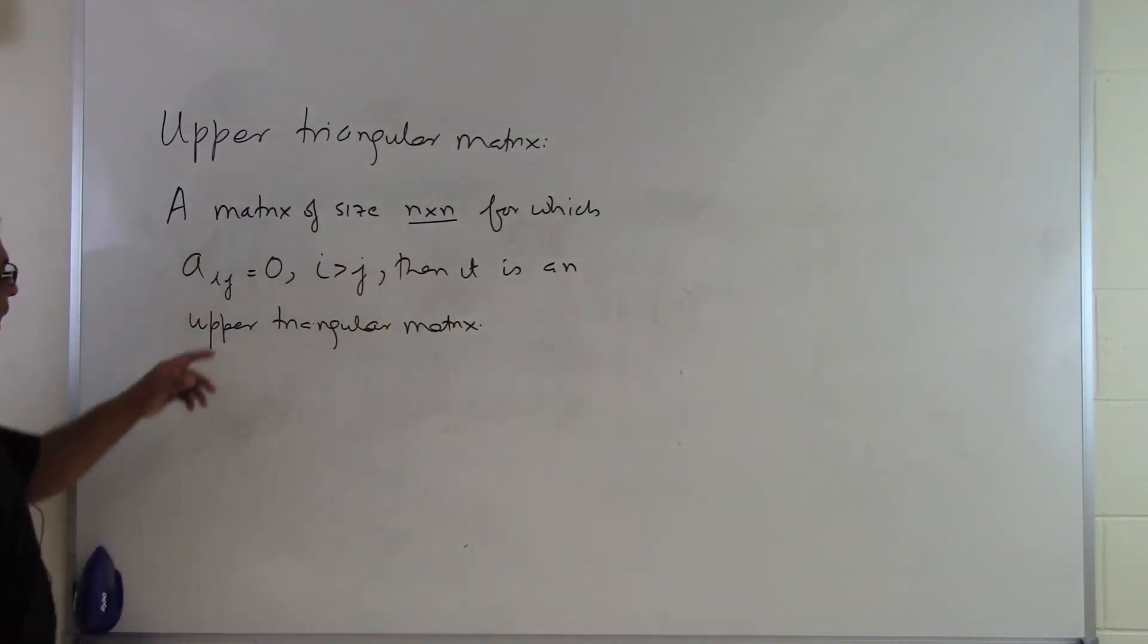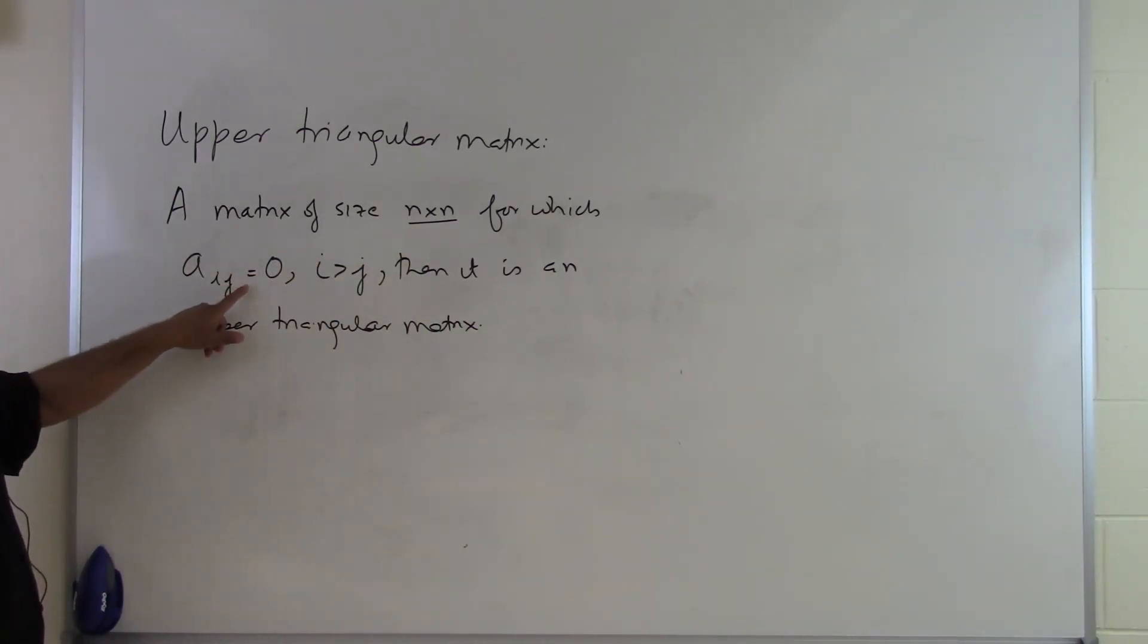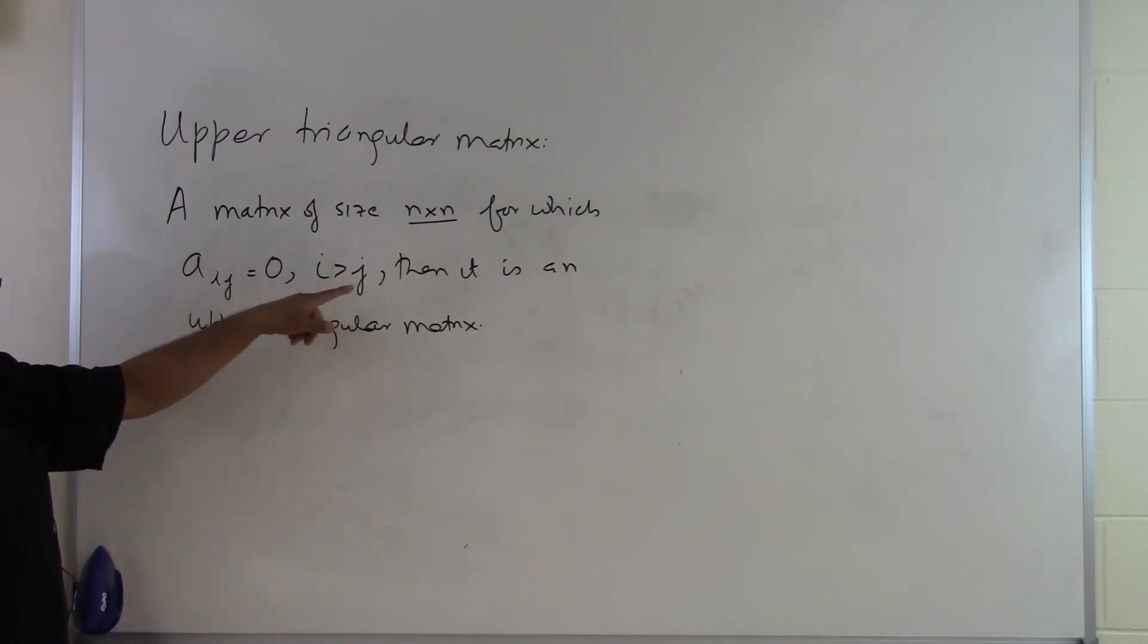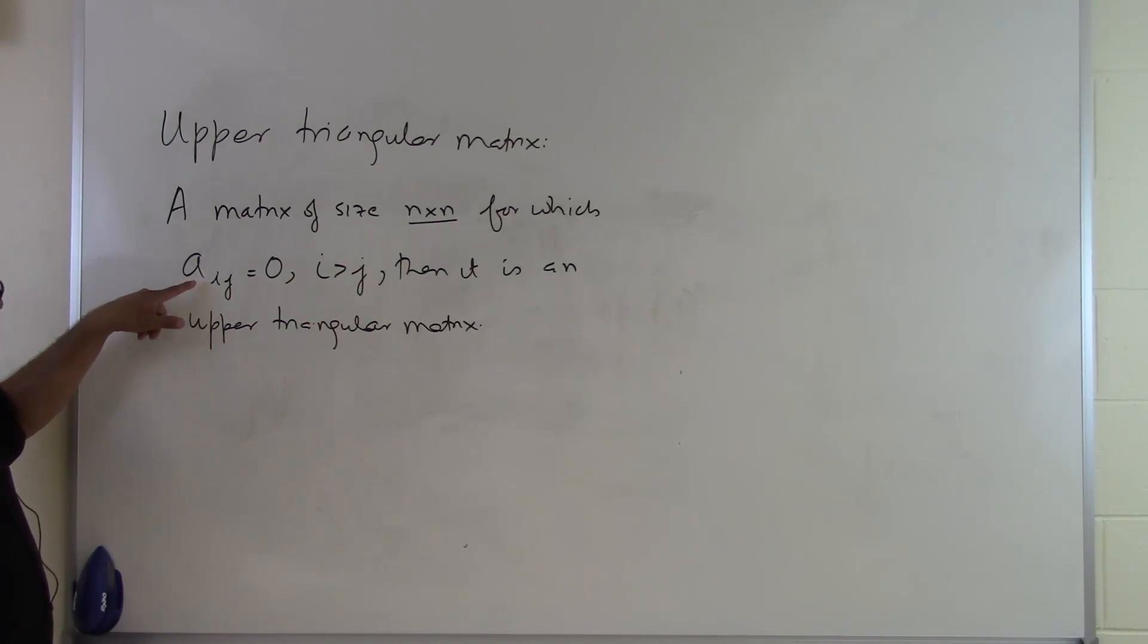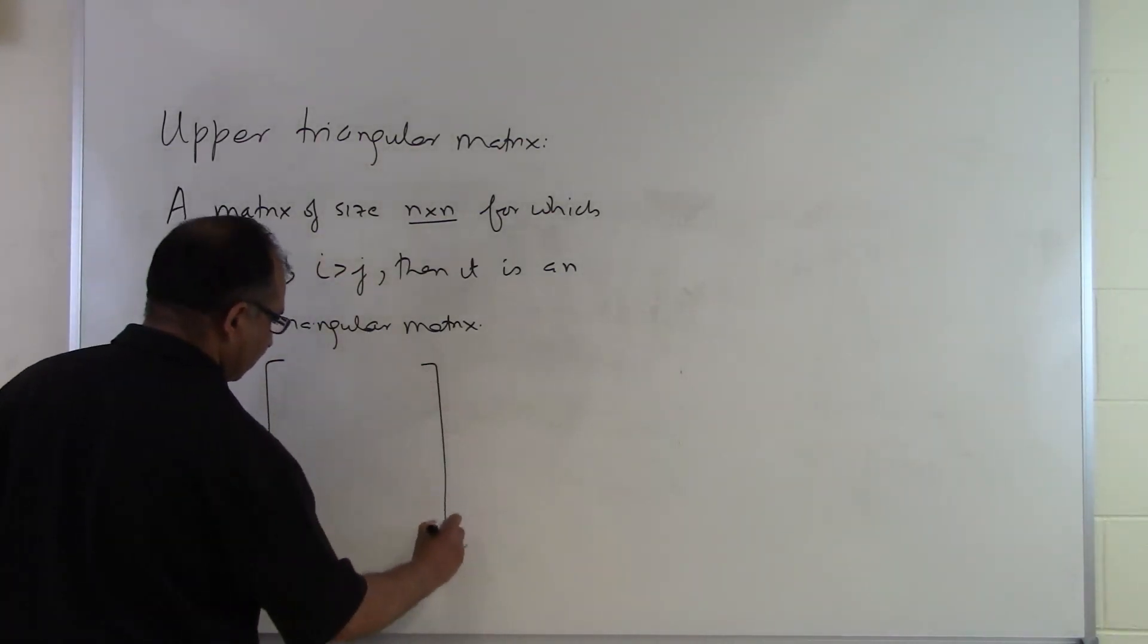So the first thing to realize is that the matrix has to be a square matrix. And the second thing is that the following elements have to be 0. Whenever you find that the row number is strictly bigger than the column number, the value of the element in the matrix has to be 0. This will be clear once you look at an example.